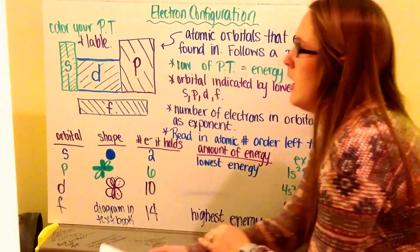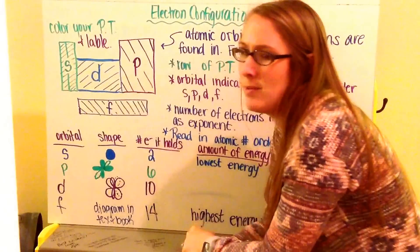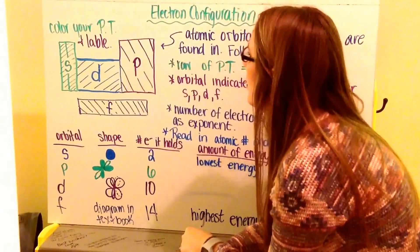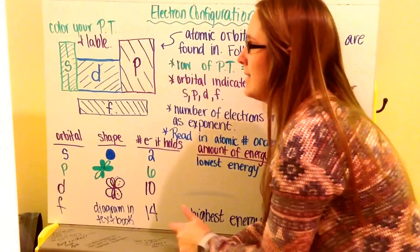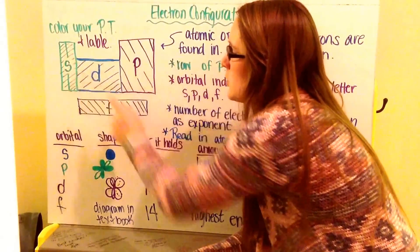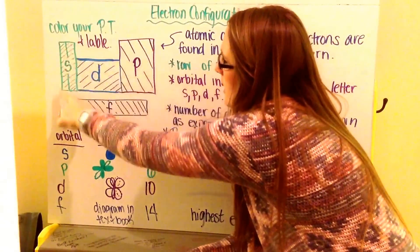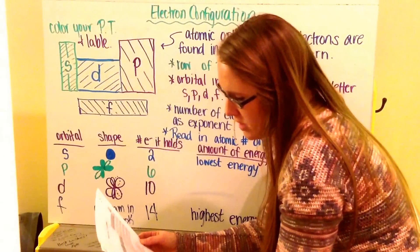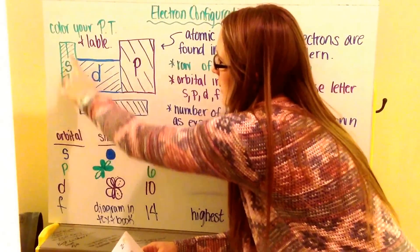This is based off of where the electrons are found and where the atom and element is found on the periodic table. The first thing you need to do is color your periodic table into the different orbital sections, which we call blocks. Group 1 and 2, so groups starting with hydrogen and beryllium, make up your S block.